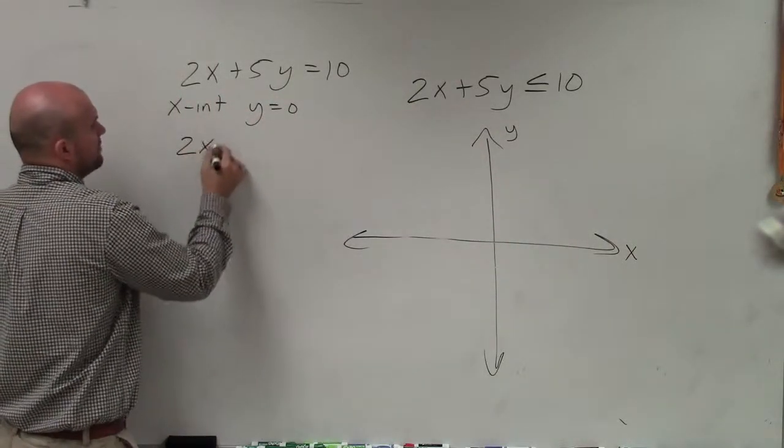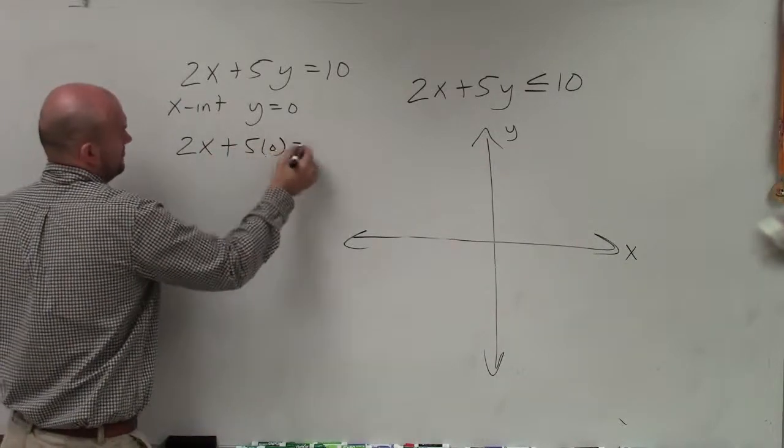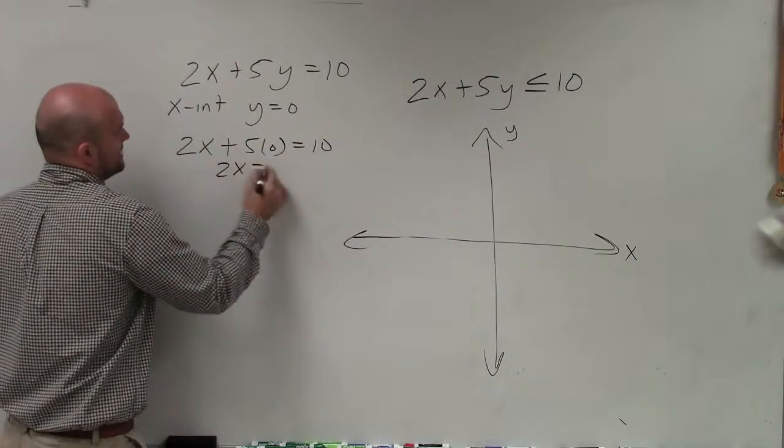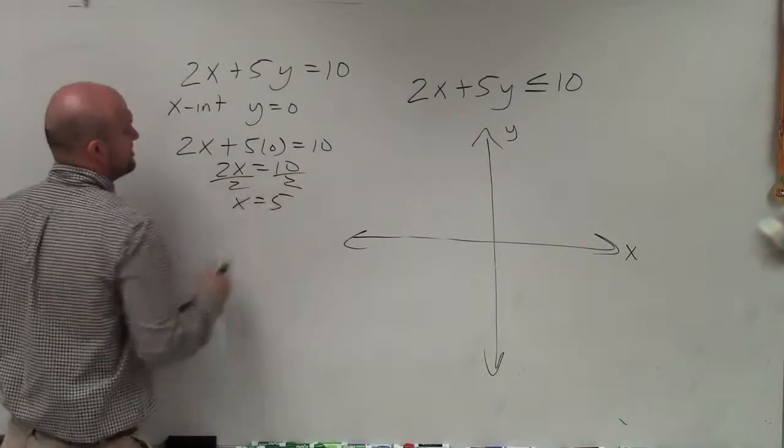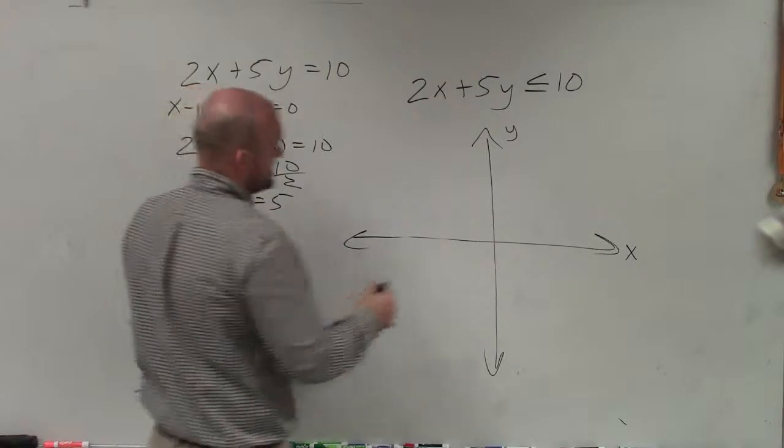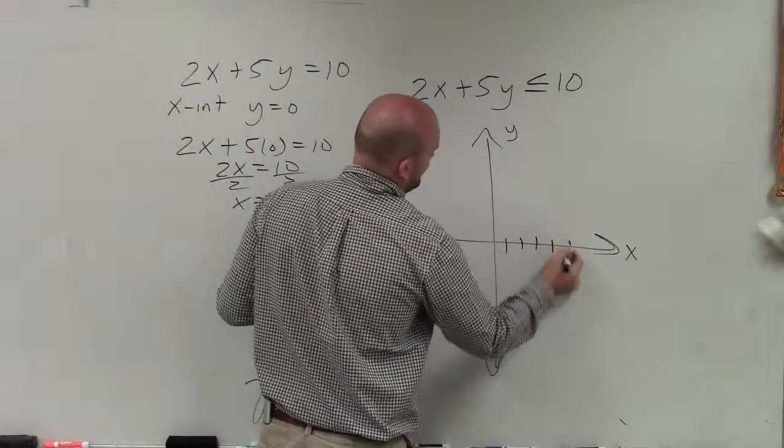So I plug 0 in for y. So I have 2x plus 5 times 0 equals 10. So I have 2x equals 10, divide by 2, x equals 5. That means the x-intercept for my equation and inequality is at 5.